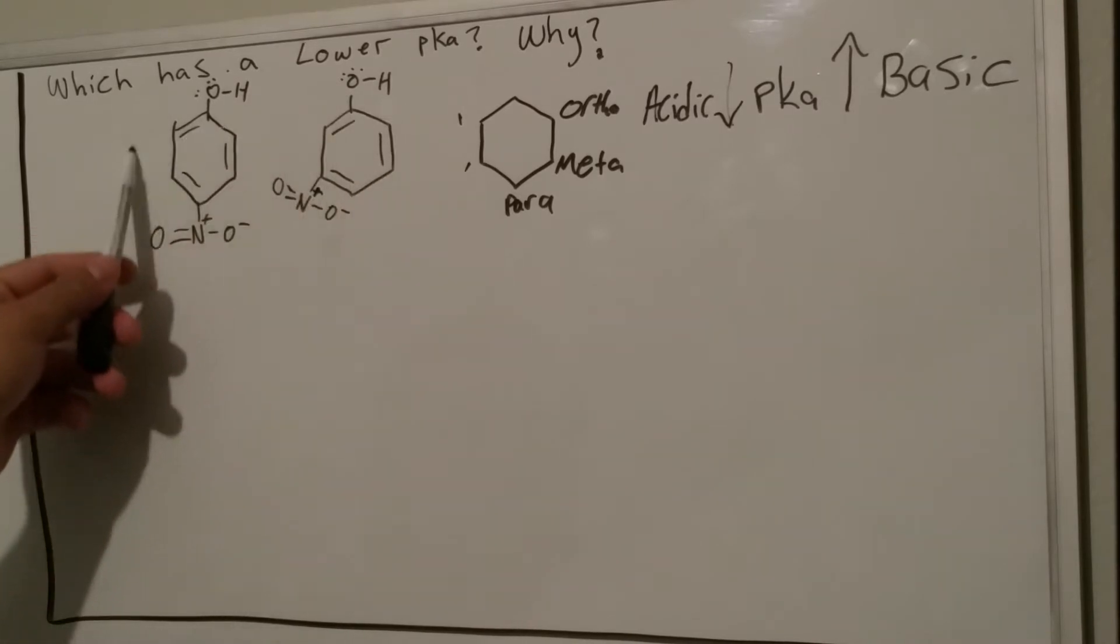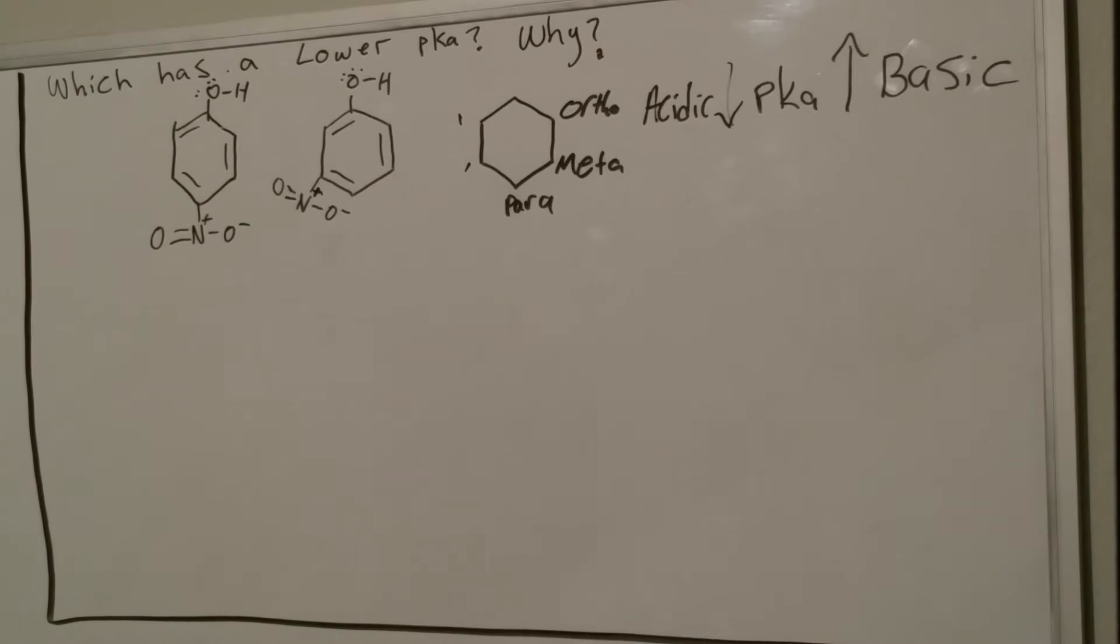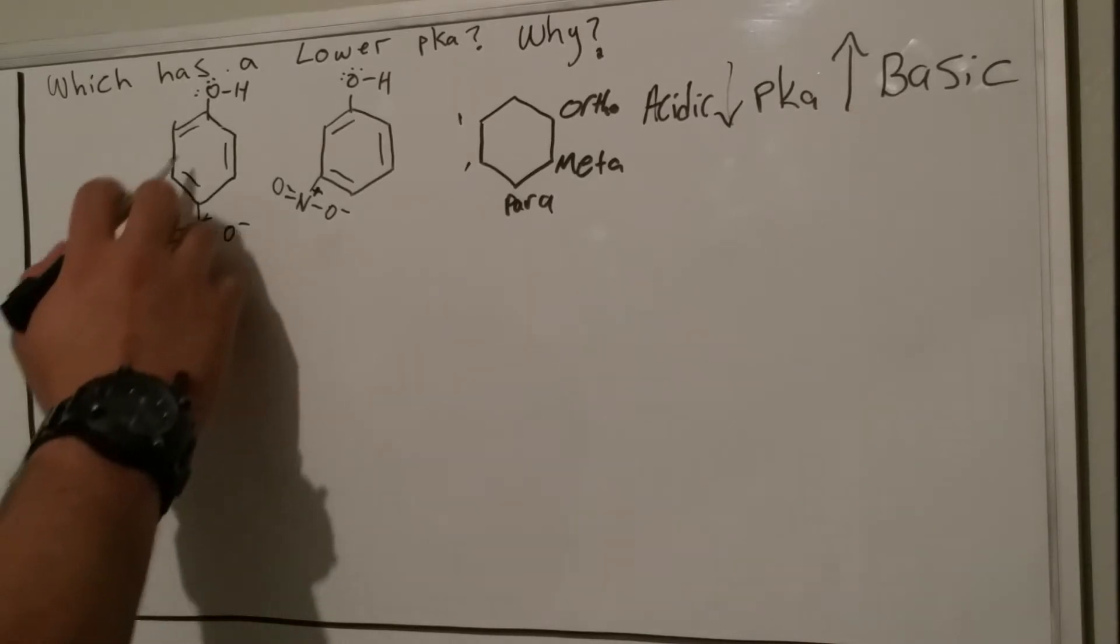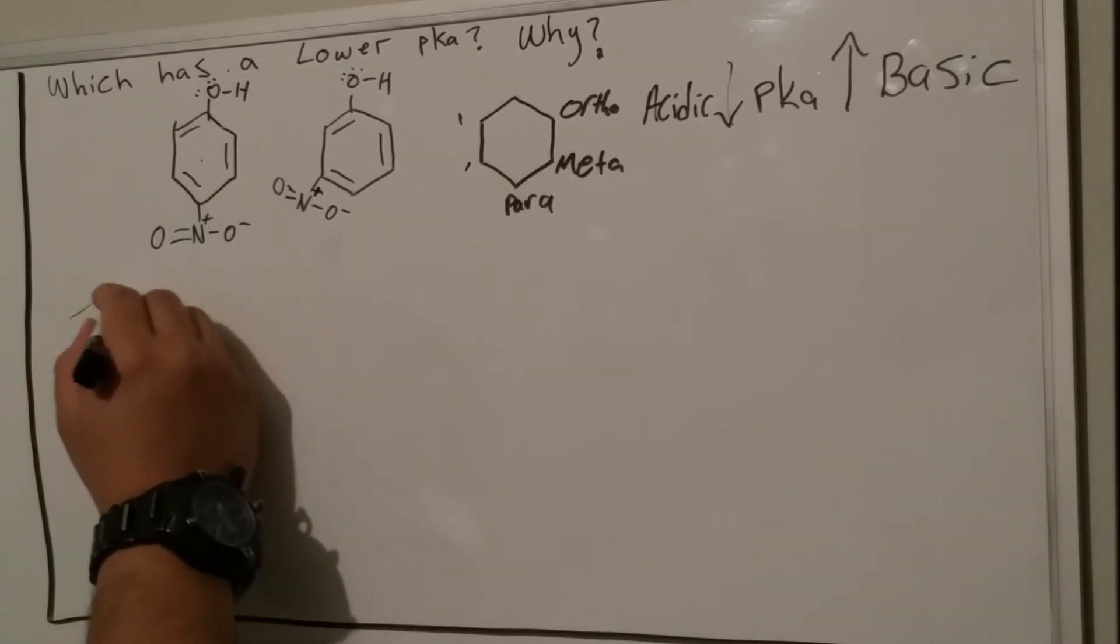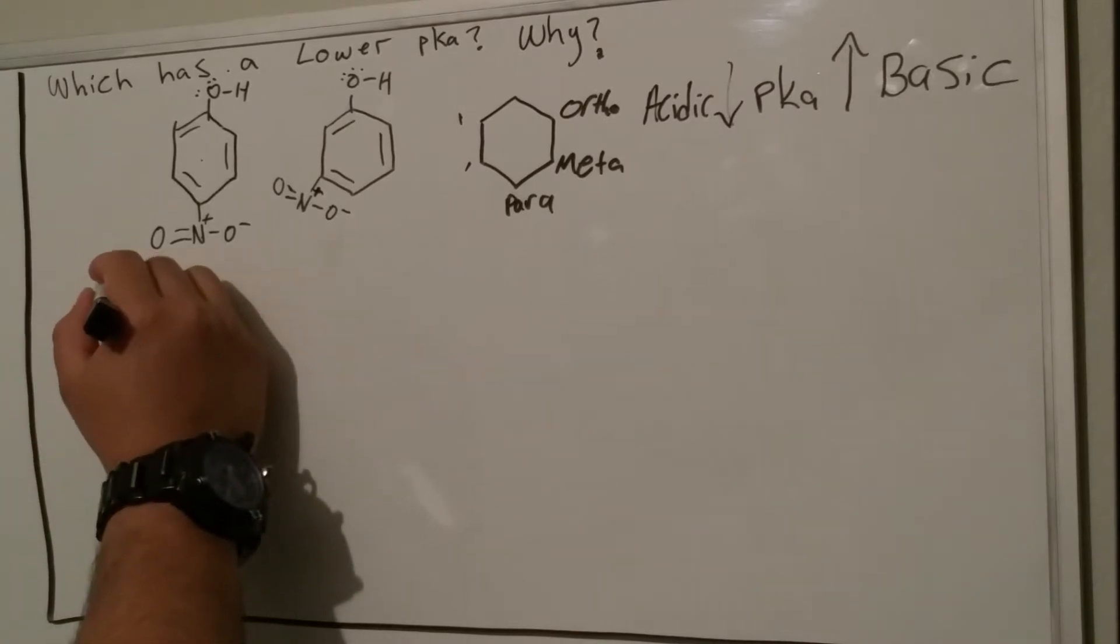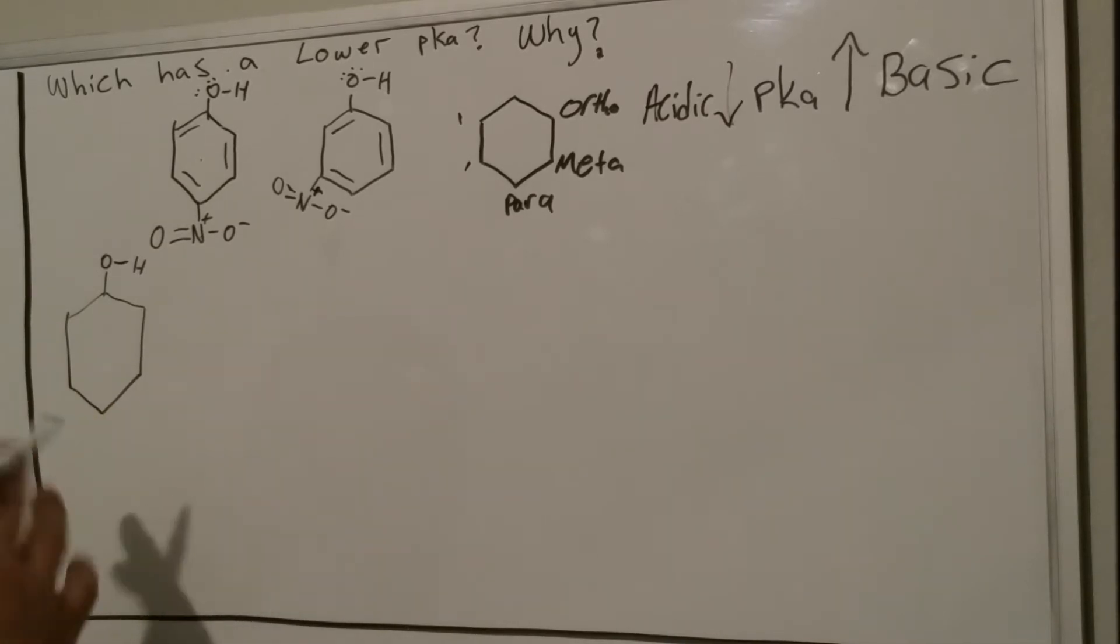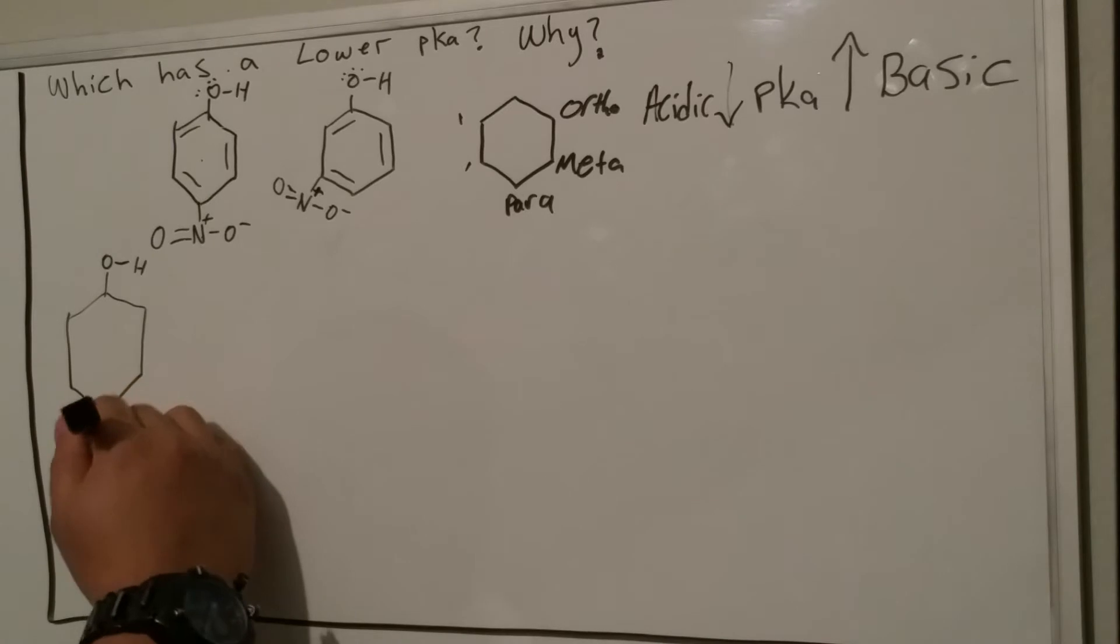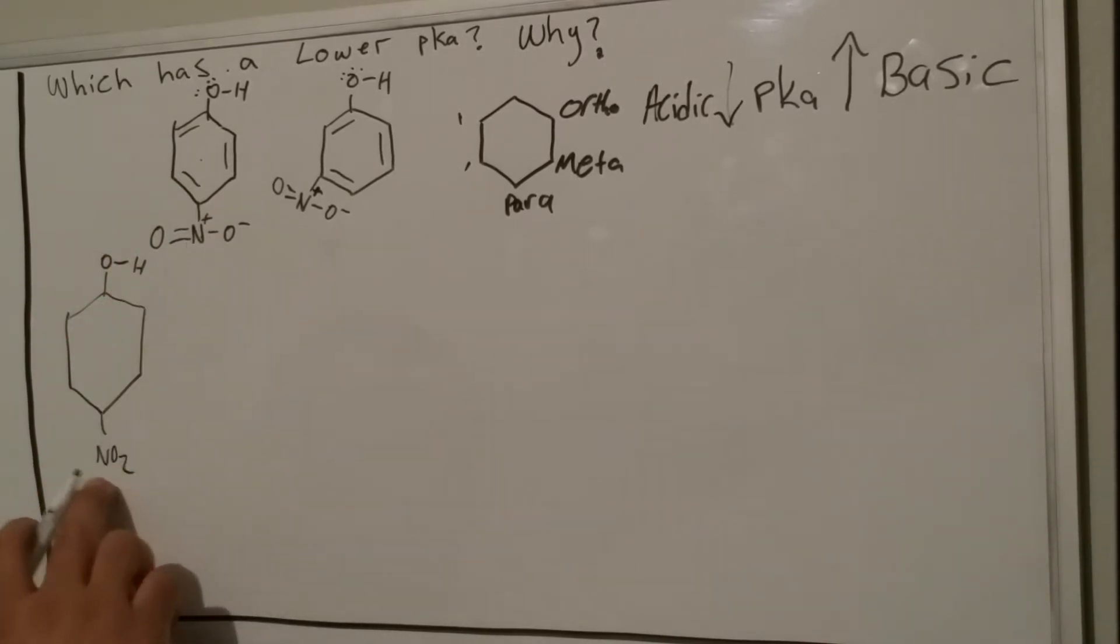The question here really is which structure, after it loses the hydrogen, is more resonance stabilized. If you can't tell just by looking at it, it helps to actually draw out the resonance structures. I'll start with the nitro group on the para position. You start with the starting material.